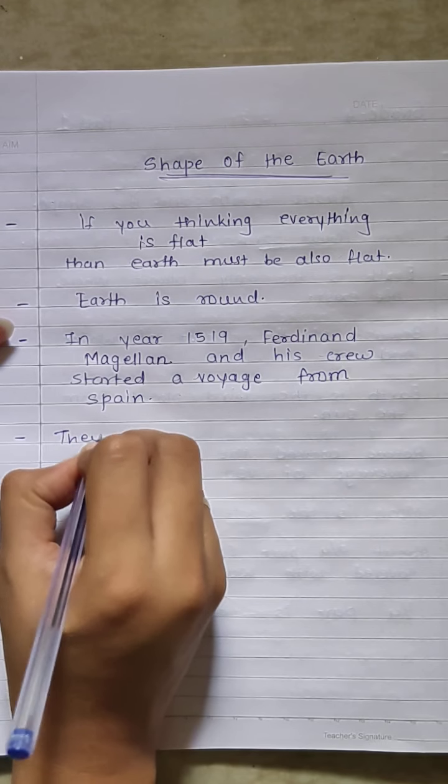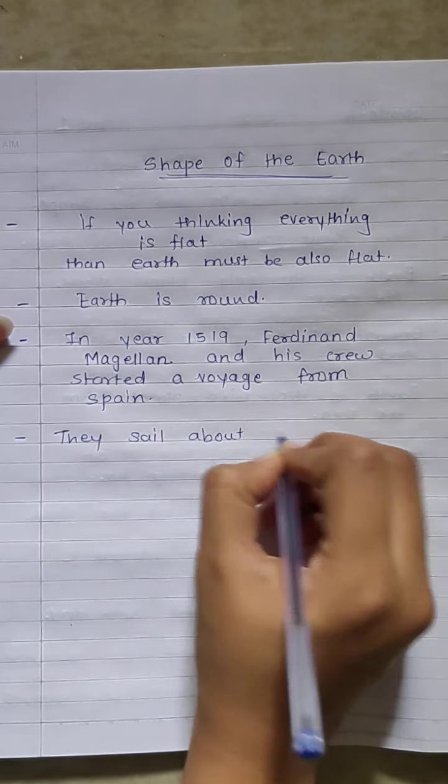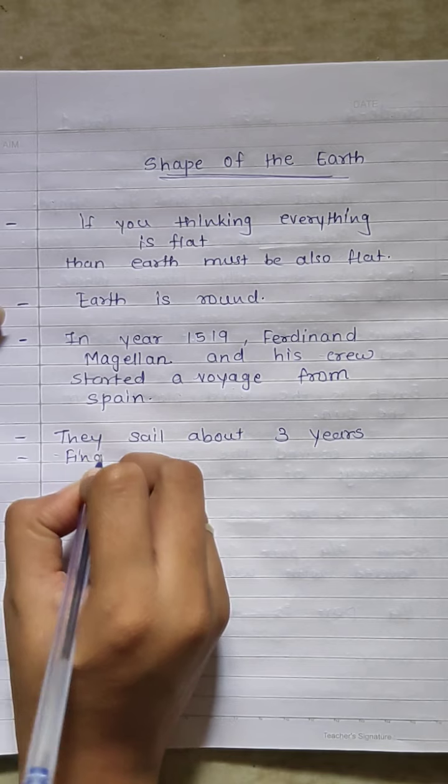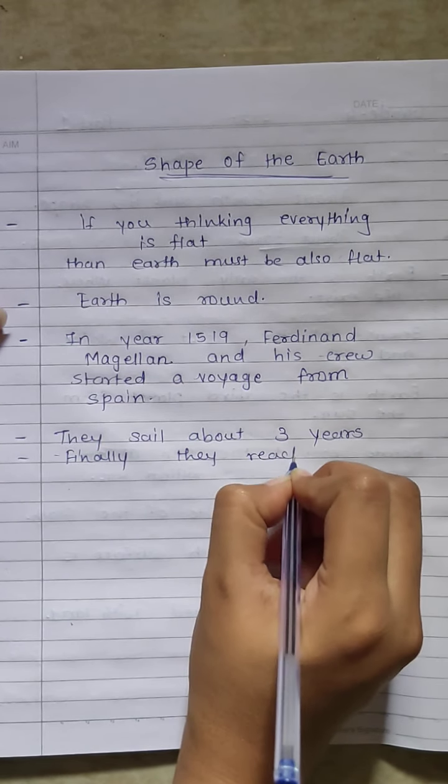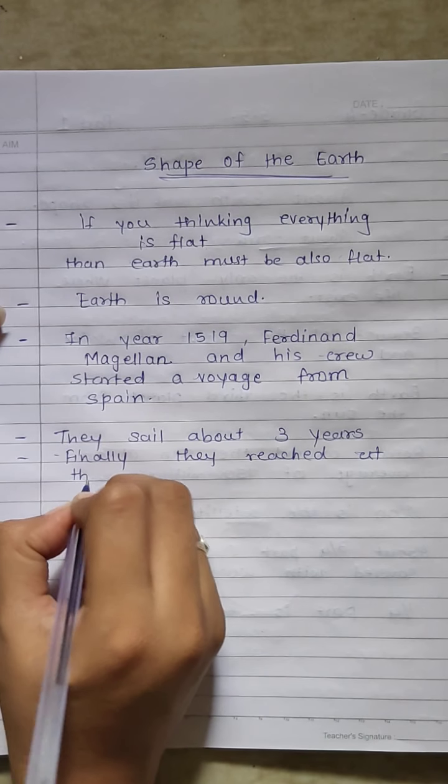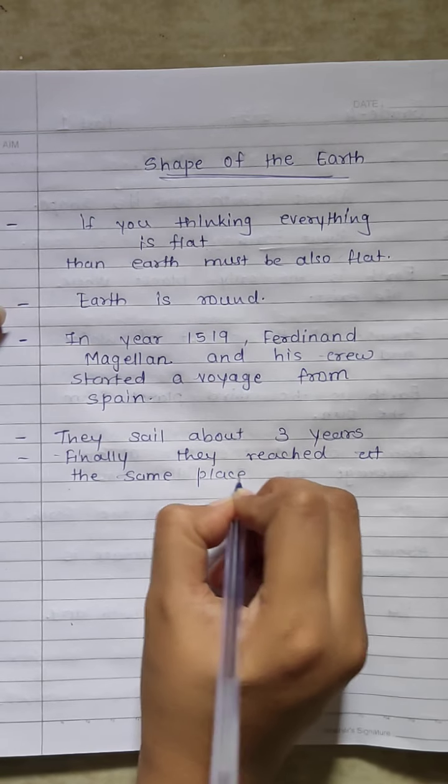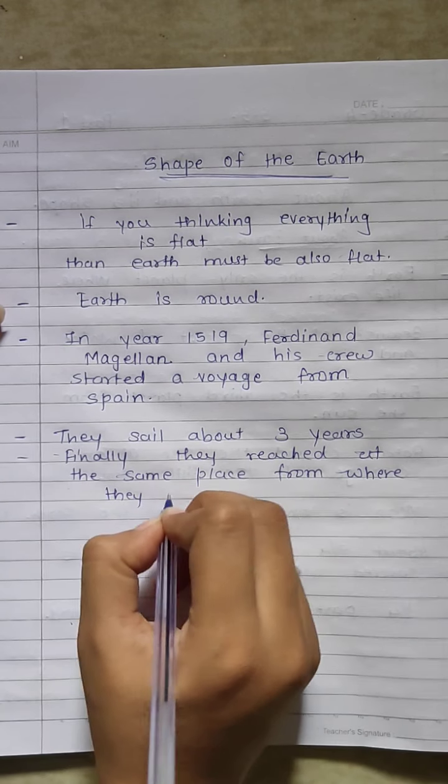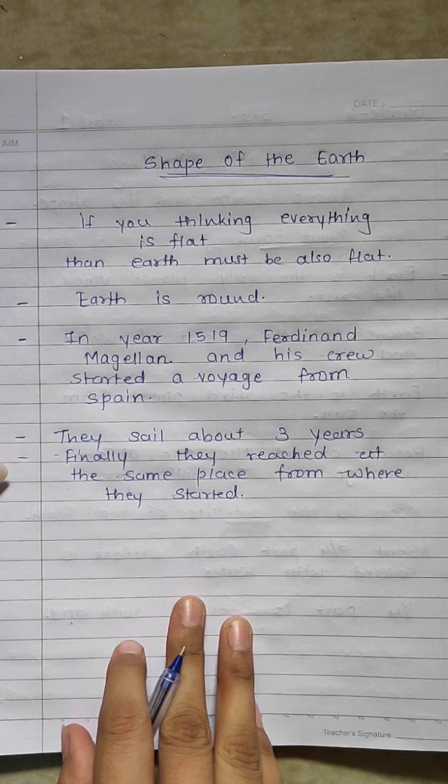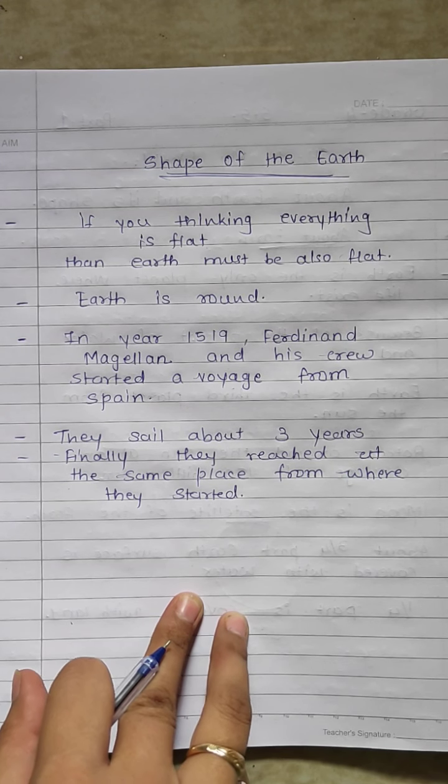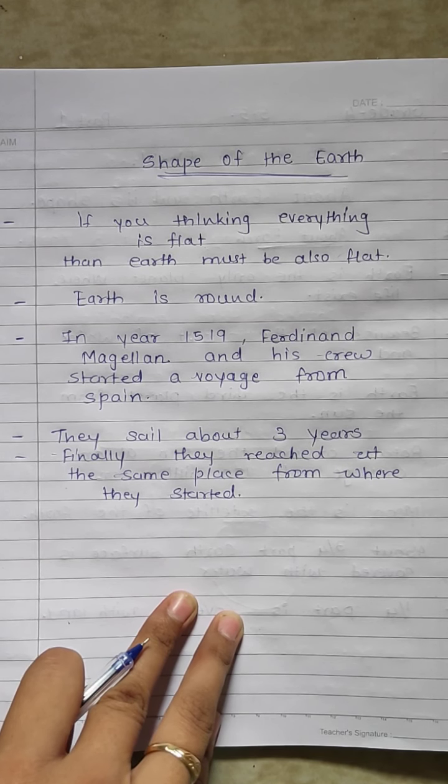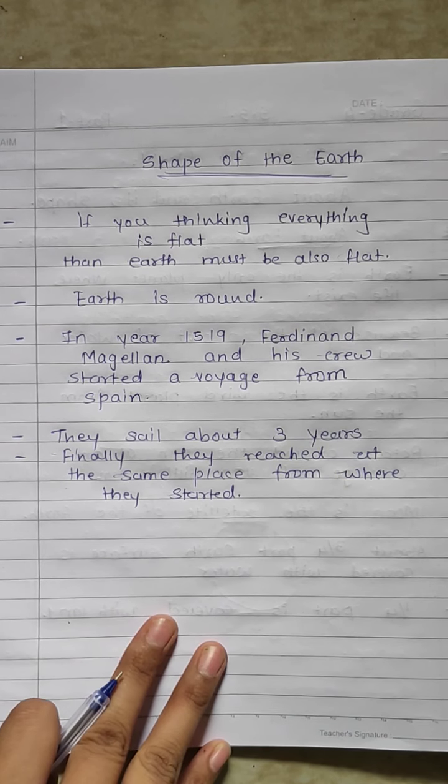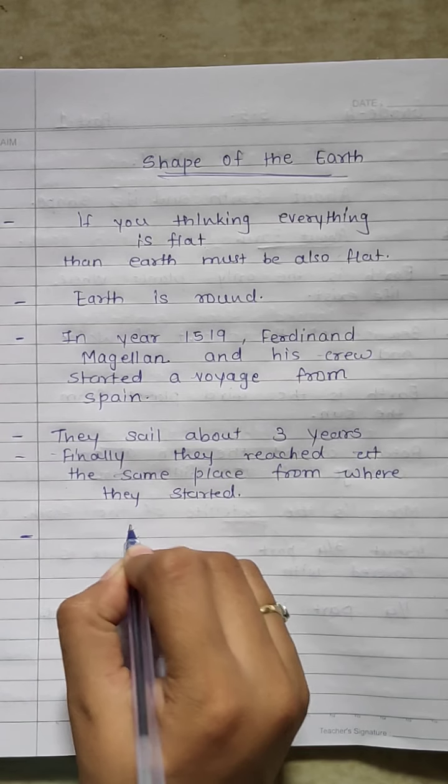They sailed about three years and finally they reached at the same place from where they started. So Ferdinand Magellan and his crew went in a ship and started sailing. After about three years, they reached at the same place from where they have started. So this proved that the earth is round.